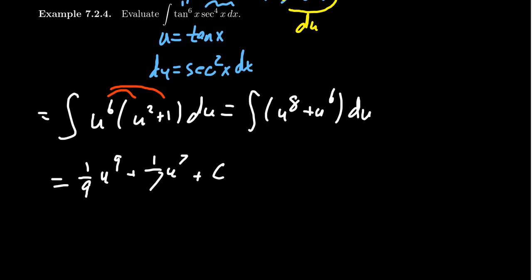And then remembering that u itself is just tangent of x, we substitute that back in to get one ninth tangent to the ninth x plus one seventh tangent to the seventh x plus a constant. And then this gives us our antiderivative right here.